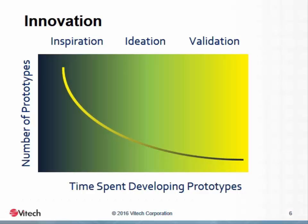To understand how beginning at a high level of abstraction fosters innovation, we consider the innovation process. Innovation takes place over time along a path that begins with a higher number of ideas or prototypes, each given only a small amount of time and consideration. The process then reduces the number of ideas under consideration while increasing the attention paid to each. There is a tendency in engineering to begin too far down this curve by immediately invoking the idea reduction process rather than generating a large number of ideas.